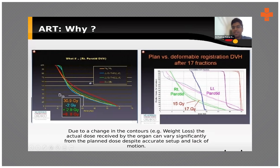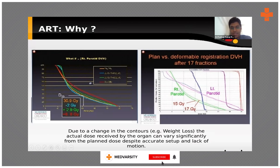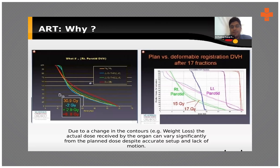Here you can see in the graph: the parotids are the most important structures in head and neck treatment, and they almost always go through a lot of changes during radiation. As beams are delivered from multiple angles and the tumor shrinks, the parotids may shift into a higher dose area. By re-planning, you can save these parotids. You can see how much difference there is without adaptive planning versus with adaptive planning.